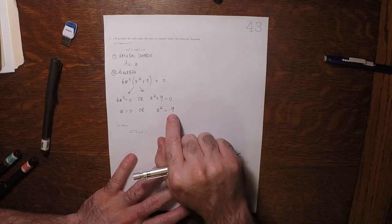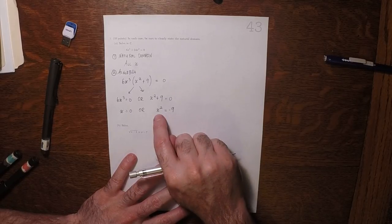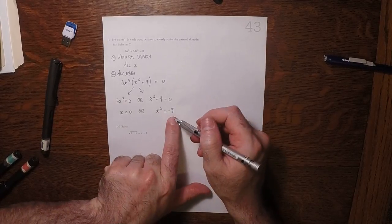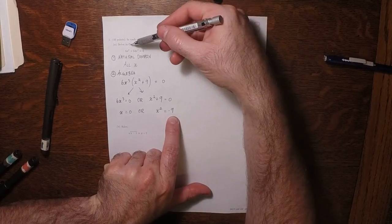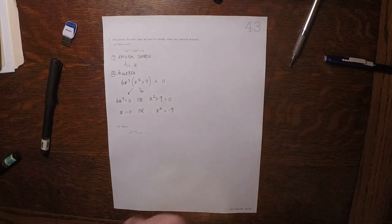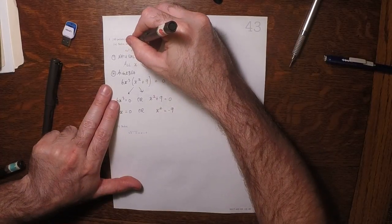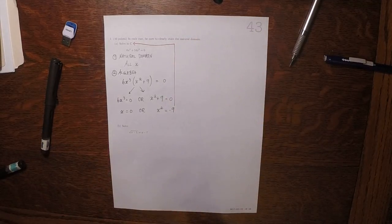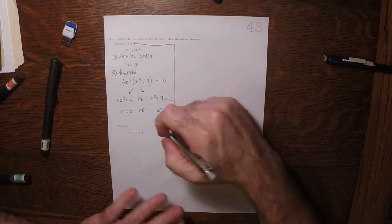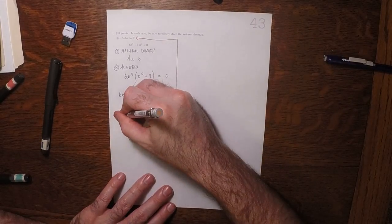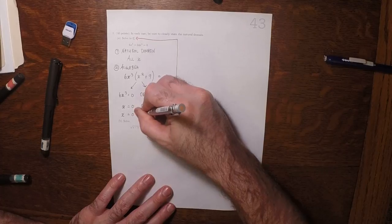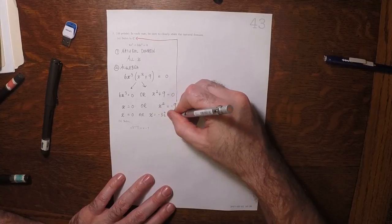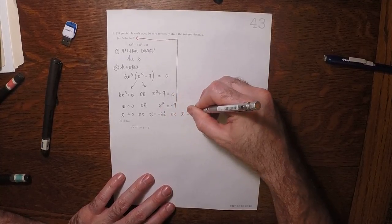If it said x squared was positive 9, the two possibilities would be negative 3 and positive 3. But because it says x squared is negative 9, we wouldn't be able to do that in the reals. But we're working in complex numbers, so 3i and negative 3i both square to negative 9. The possibilities are x is 0, or x is negative 3i, or x is positive 3i.